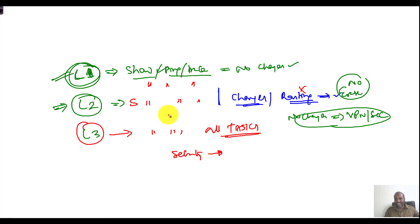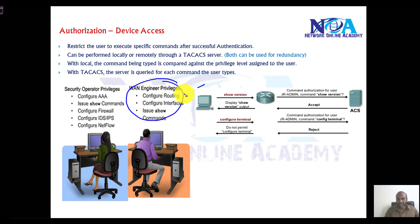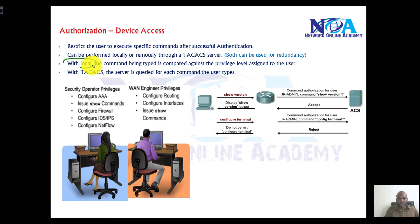Once the user gets authenticated, it is very important to make sure they are also authorized, so we can assign the appropriate level of access. For WAN engineers, security operators, and other groups, we define the permissions accordingly. Just like authentication, we can use either a local database or an external server for authorization.